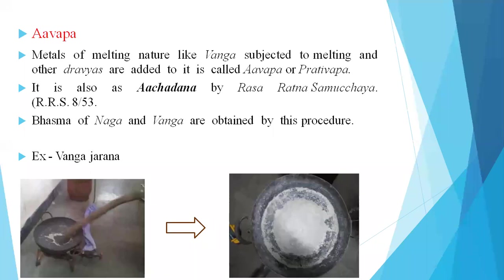The meaning is: 'Dravyaanthara vinikshepo drute vanga adike' — some herbal drugs, their powder, are added to molten metals or minerals. For example, vanga adike — it may be naga or eshra. He has quoted the example of vanga and other such metals and minerals. That process of adding herbal powder into molten metal is named as Avapana.